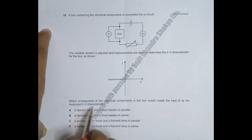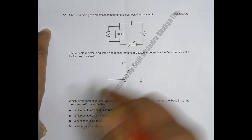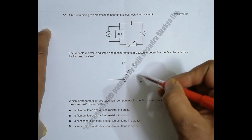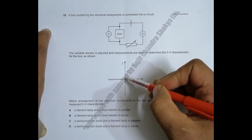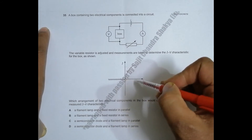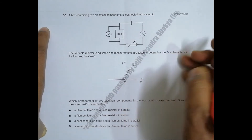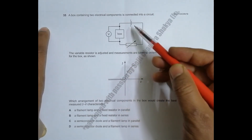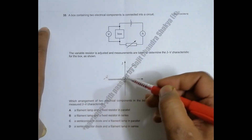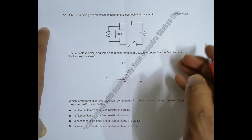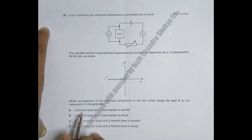Which arrangement of two electrical components in the box would create the best fit to the measured IV characteristic? From the graph, when we increase the value of V from zero, the current rises, and as V increases more, the rise of voltage PD will be more but the rise of current will be less. If we reverse the voltage, the reverse voltage increases but current does not flow.